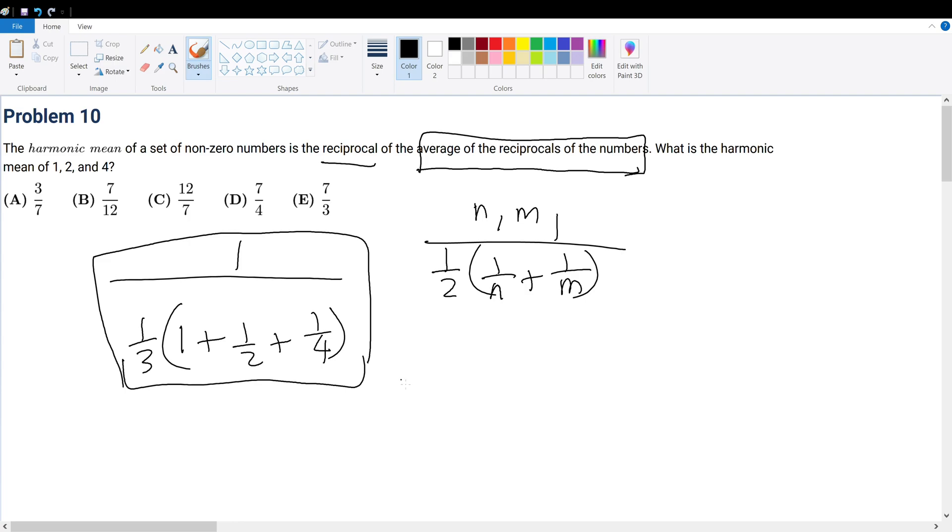So if we were to evaluate it, that becomes 3 over 1 plus 1 over 2 plus 1 over 4. So what is the denominator?